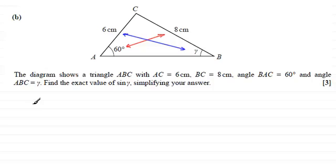So using the sine rule what we do is we take our angle, in this case sine of gamma, and compare it with the opposite side which is six centimeters. And this is exactly the same as comparing the sine of an angle, in this case sine of 60 degrees, with its opposite side which is eight centimeters.